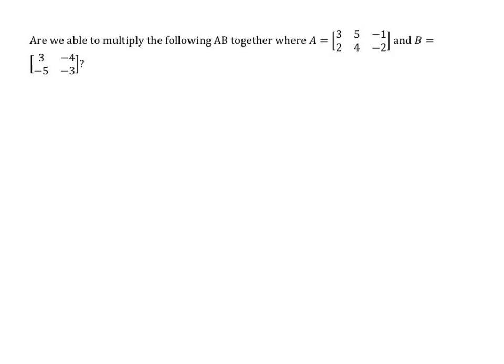Are we able to multiply A times B? So it looks like we have a 2 by 3, and we want to multiply that by a 2 by 2. Well here, these aren't the same. So no, we can't. And this concludes section 2.4 on multiplication.